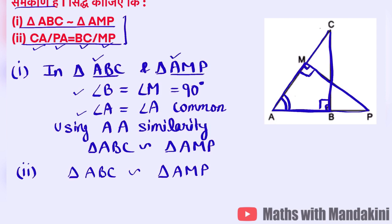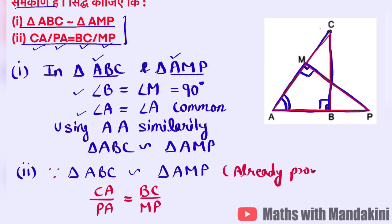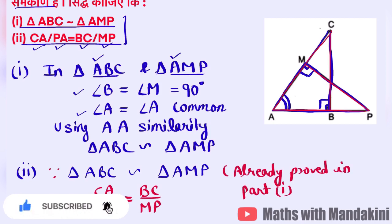Since triangle ABC is already proved similar to triangle AMP, the ratio of corresponding sides will be equal. CA is the hypotenuse of triangle ABC, and PA is the hypotenuse of triangle AMP — so CA upon PA equals BC upon MP. BC is the base/perpendicular of triangle ABC and MP is the perpendicular of triangle AMP. This is the corresponding sides ratio being equal, because both triangles are similar — already proved in Part 1.